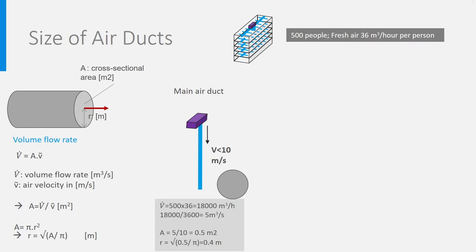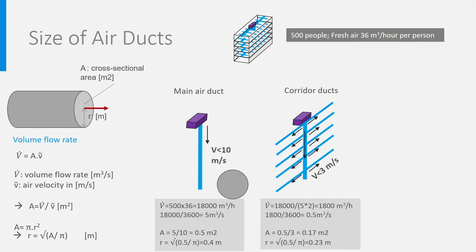Let's look now at the corridor ducts. There are five floors. Each floor needs 18,000 divided by 5 is 3,600 cubic meters per hour. This is divided into two zones, one part of the air goes left and the other one right. So, we need only half per branch, which is 1,800 cubic meters per hour, which is 0.5 cubic meter per second. With an air velocity of 3 meters per second, this leads to a cross-sectional area of 0.17 square meter, corresponding to a radius of 0.23 meter, a diameter of 46 centimeter.